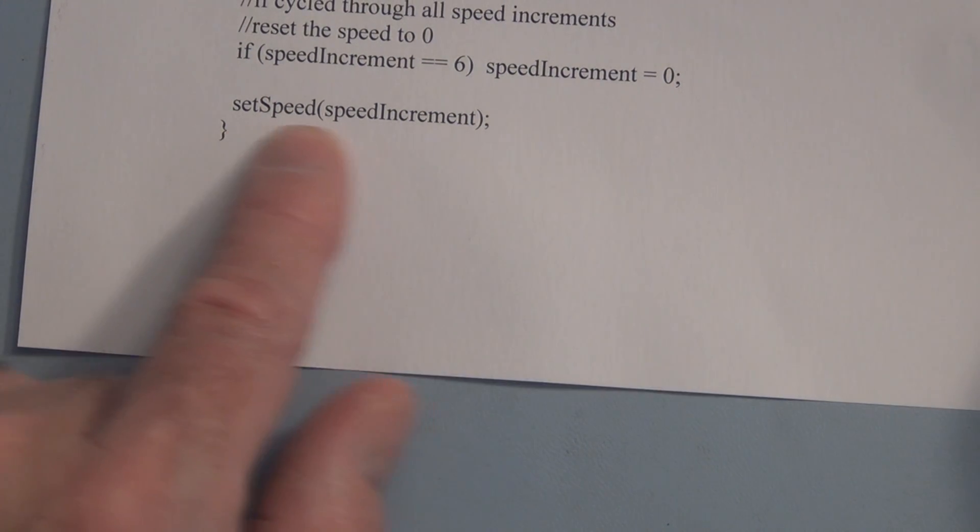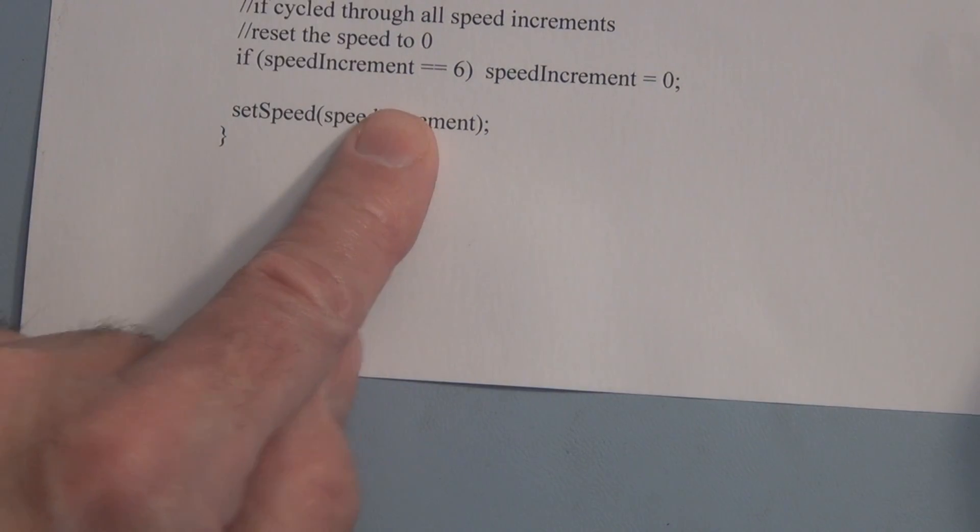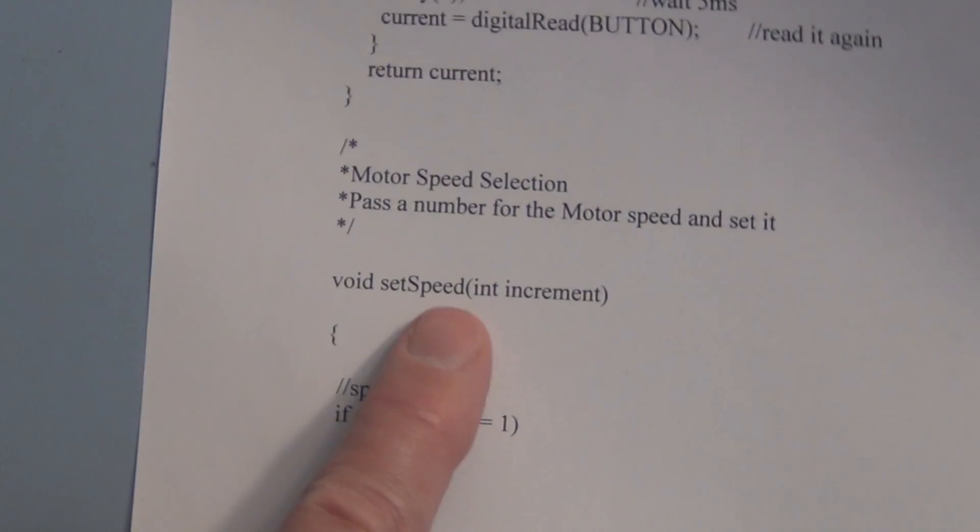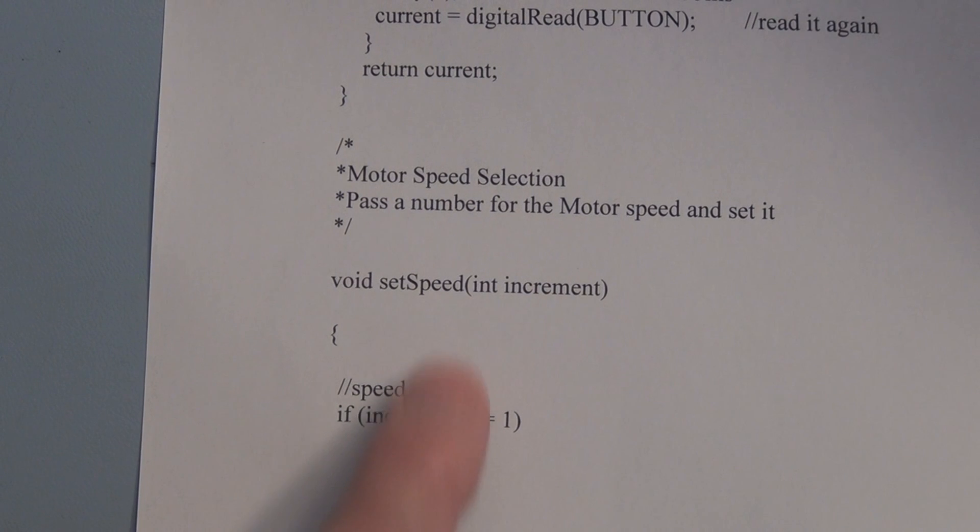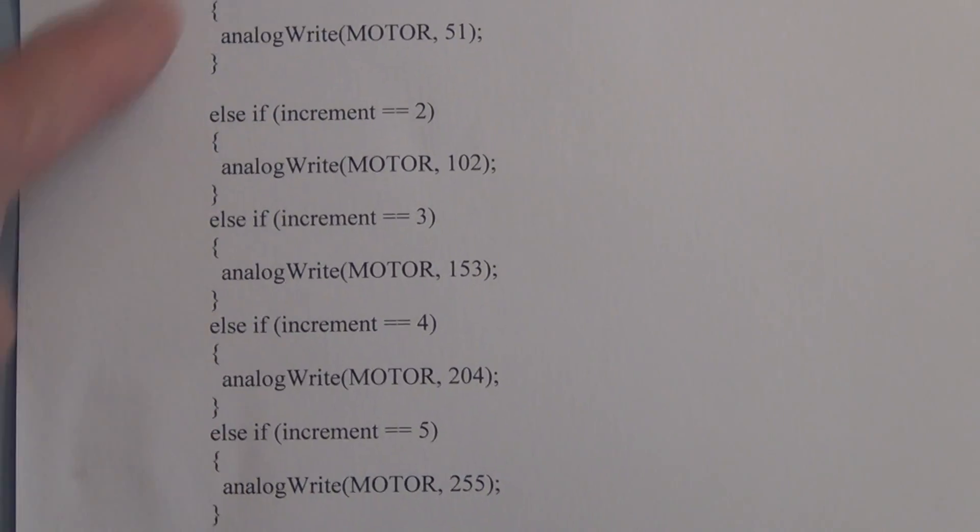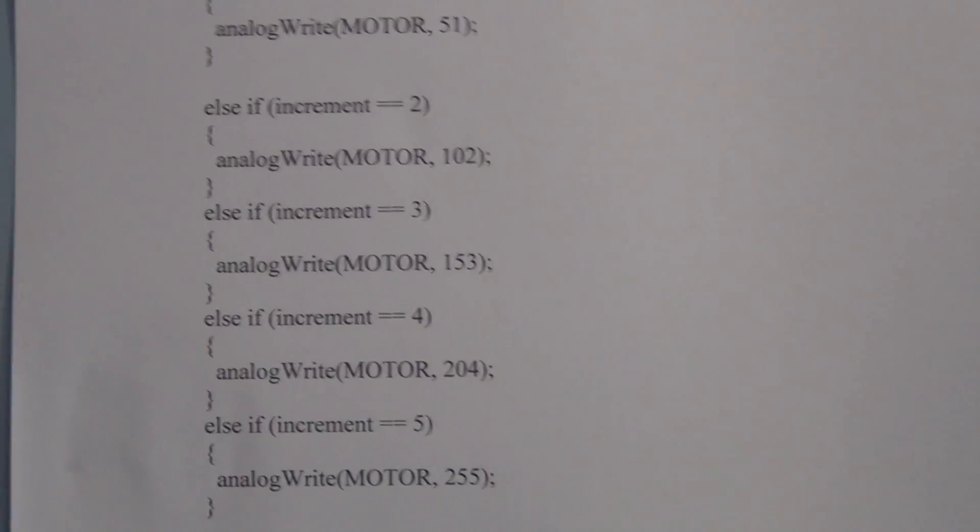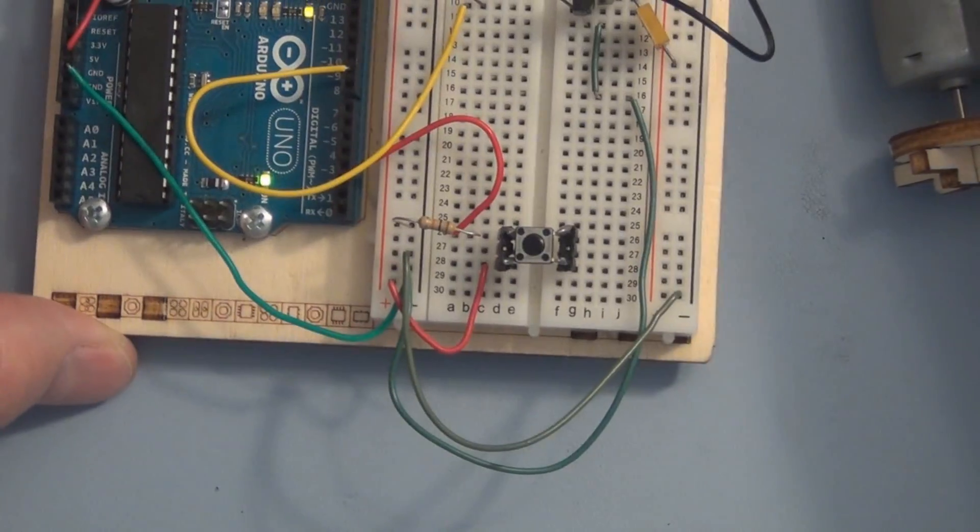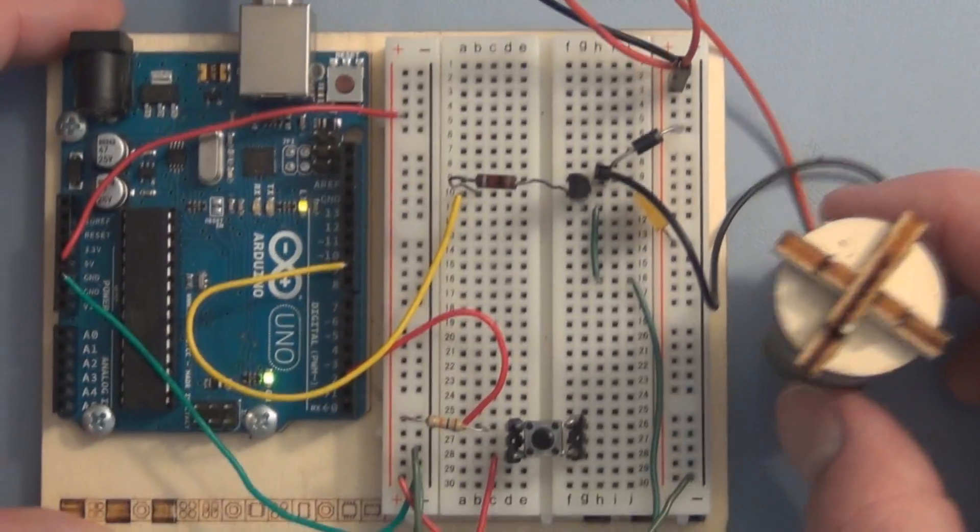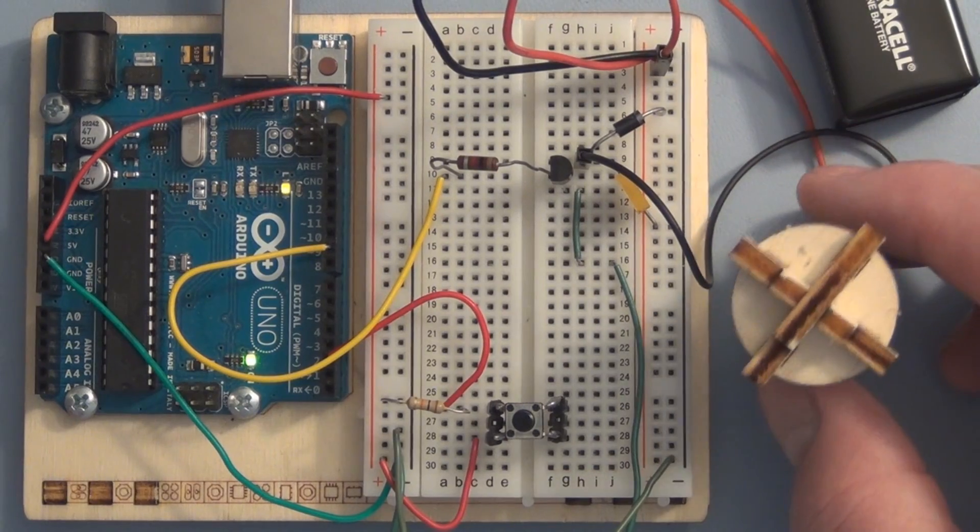And set speed, speed increment, this incremented value gets returned to this function here that then, depending on its value, chooses which speed that we just went through these five individual speeds. And again, you can add to that or subtract to that. You could have as many increments as you want. And that's essentially there, I'm sure there are plenty of other ways to go about stepping through some pre-determined speeds. But that's the way that I've done it here.